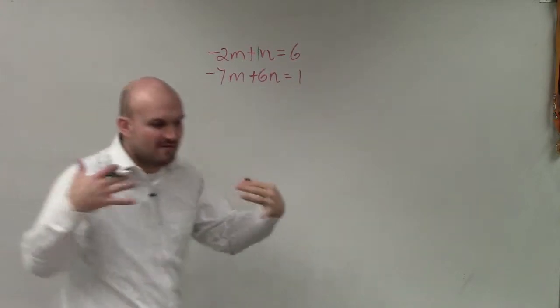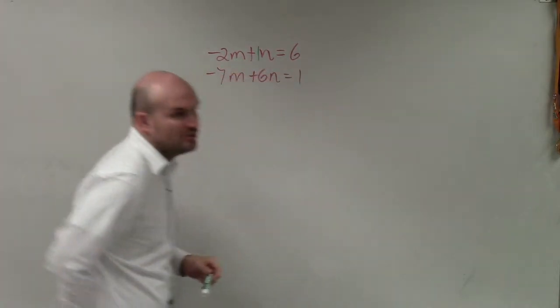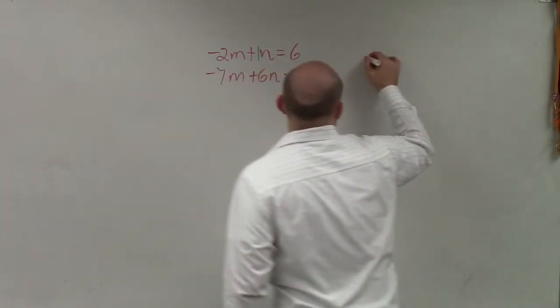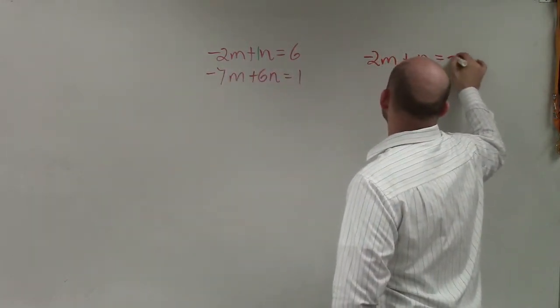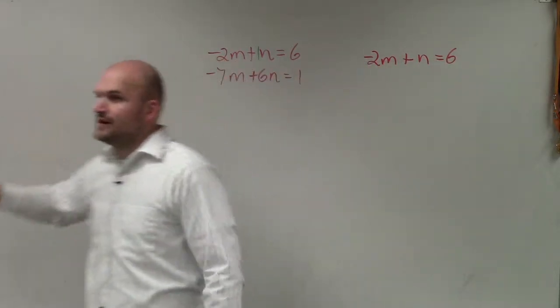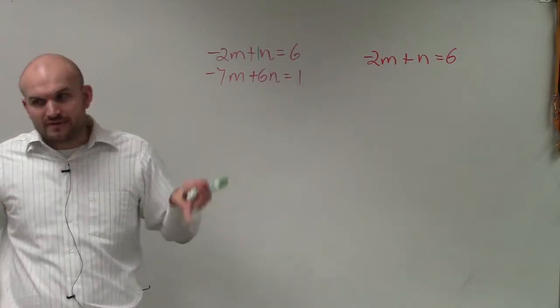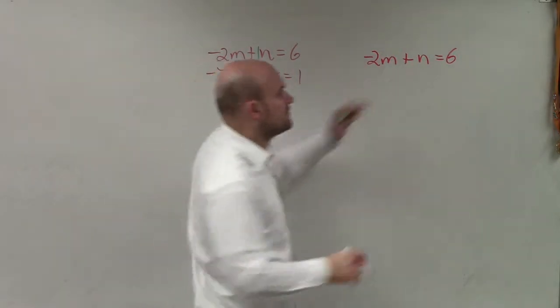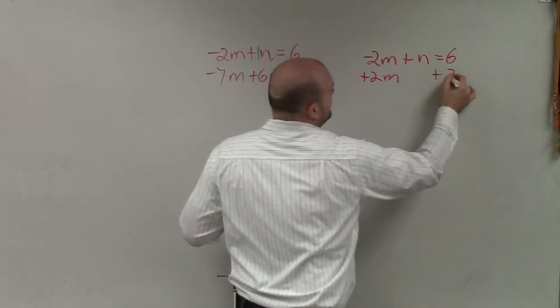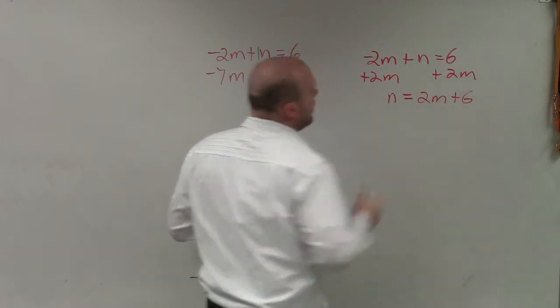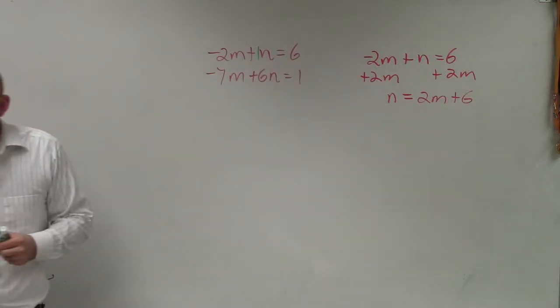So when you have that variable that has a coefficient of 1, that is going to be the variable that you're going to want to solve for. So I have negative 2m plus n equals 6. Since this is the only variable, and it doesn't really matter, even if it's not the only variable, if there's more than one variable that has a coefficient of 1, then just pick one. But you're going to want to solve for your variable n.